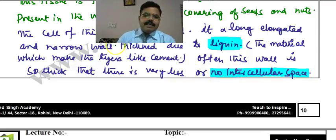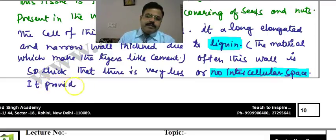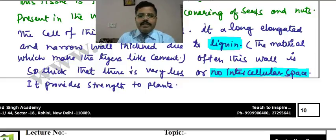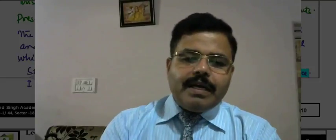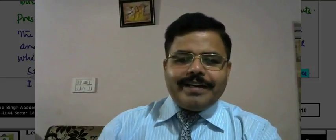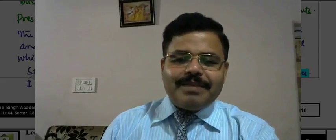Sclerenchyma provides strength to the plants. In this way, we have covered simple permanent tissue. In the next video, we will talk about complex permanent tissue. Thank you.